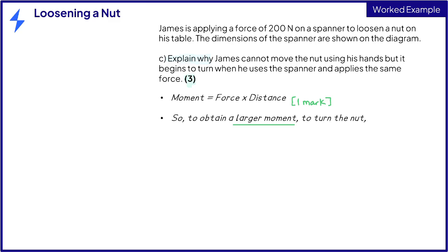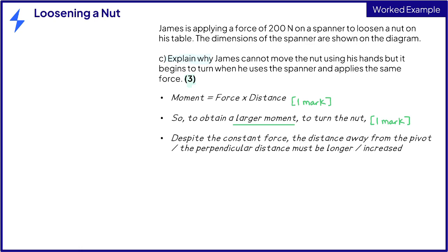The question says it is easier for James to turn the nut using a spanner instead of his hands. This implies that the spanner provides a larger moment for the second mark. James is providing a constant force, so he can get a larger moment from turning at a greater distance from the pivot, which is what the spanner provides for the third mark.